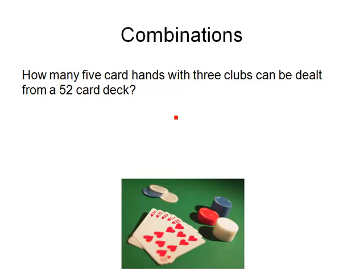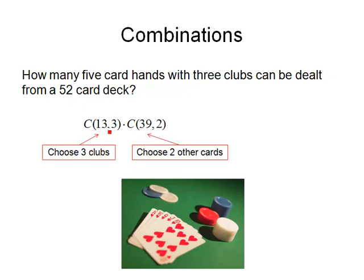Now let's modify this a little bit. How many 5-card hands with exactly 3 clubs can be dealt from a 52-card deck? I need to choose my clubs and then choose 2 other cards to fill out my 5-card hand. C(13,3) is the number of ways to choose 3 clubs from the 13 clubs in the deck. Once I've chosen my 3 clubs, I need to choose 2 other cards from any suit other than clubs — that leaves 39 cards remaining. So the answer is C(13,3) times C(39,2).